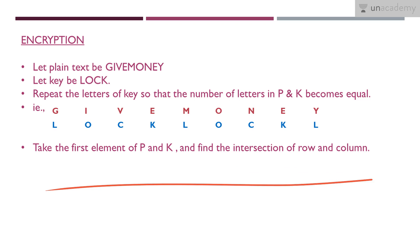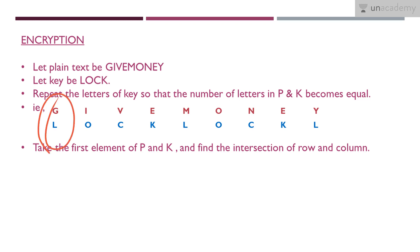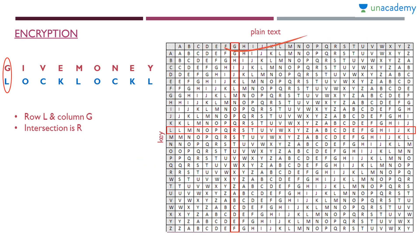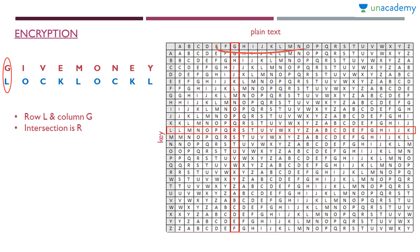Now take the first elements of P and K and find the intersection of the row and column — that is the procedure to encrypt using the Vigenère method. Using the Vigenère table, row corresponds to the key and column corresponds to the plain text. So we take G (plain text) and L (key). We select row L and column G, and find their intersection, which is R.